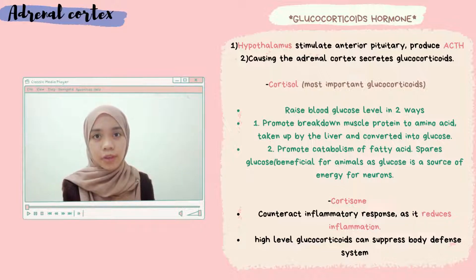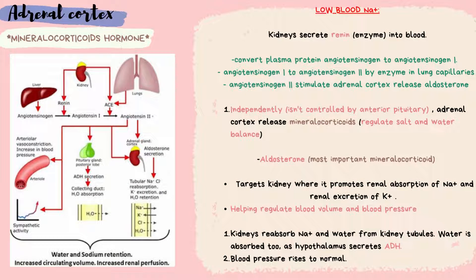Another glucocorticoid, cortisone, counteracts the inflammatory response and can reduce inflammation. The adrenal cortex also secretes mineralocorticoids. When blood sodium is low, the kidneys secrete renin, which converts plasma protein angiotensinogen to angiotensin I. Angiotensin I is then converted to angiotensin II by an enzyme in the lung capillaries. Angiotensin II stimulates the adrenal cortex to promote reabsorption of sodium and water from the kidney tubules. Water is also absorbed as the hypothalamus secretes ADH, and blood pressure rises back to normal.